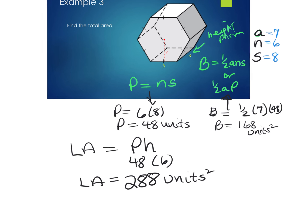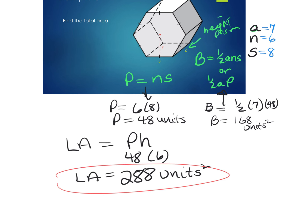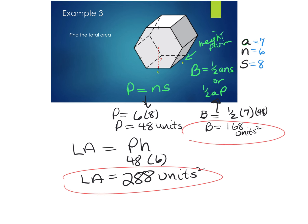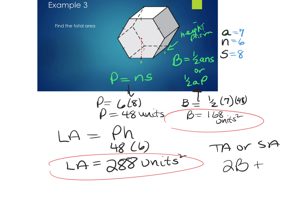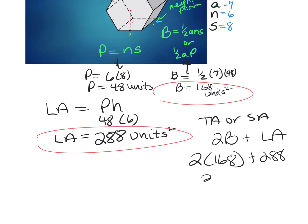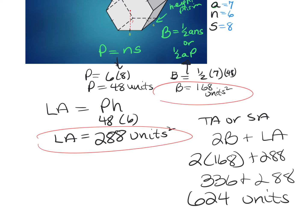Now that I have the lateral area and the base area, I can find the total area, also known as surface area: 2 times the base area plus the lateral area. So 2 × 168 + 288 = 336 + 288 = 624 units squared.